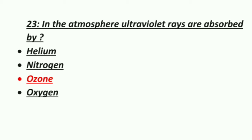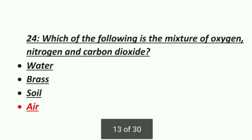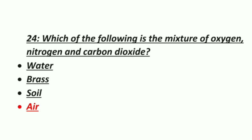Twenty-third MCQ: in the atmosphere, ultraviolet rays are absorbed by — Option 1: Helium, Option 2: Nitrogen, Option 3: Ozone, Option 4: Oxygen. Twenty-fourth MCQ: which is the mixture of oxygen, nitrogen, and carbon dioxide? Option 1: Water, Option 2: Brass, Option 3: Soil, Option 4: Air. The correct answer is air.